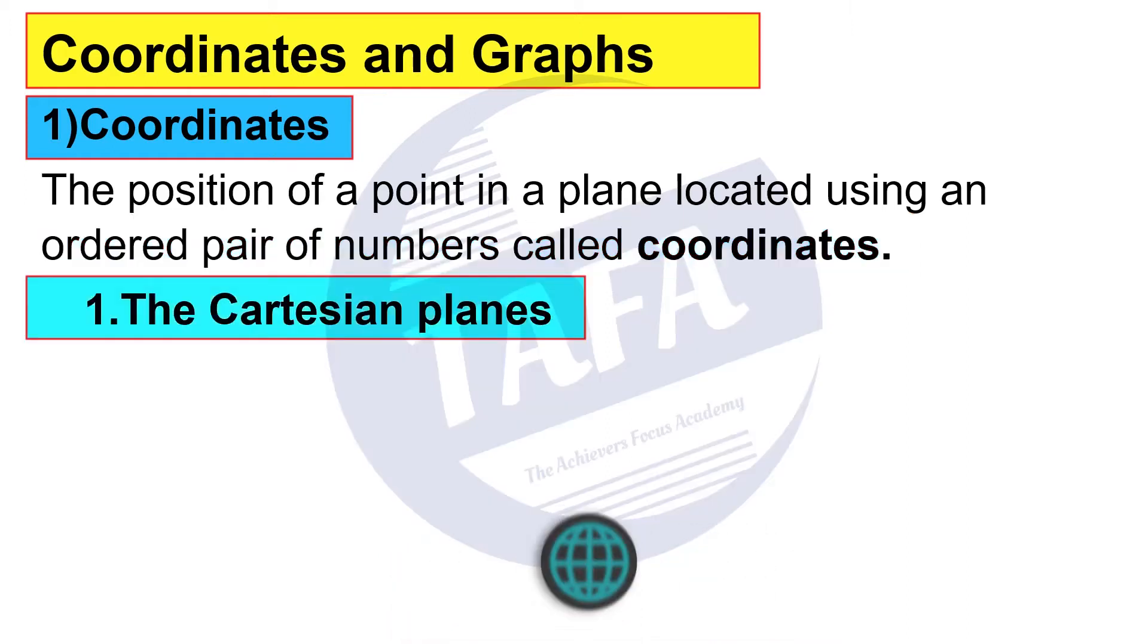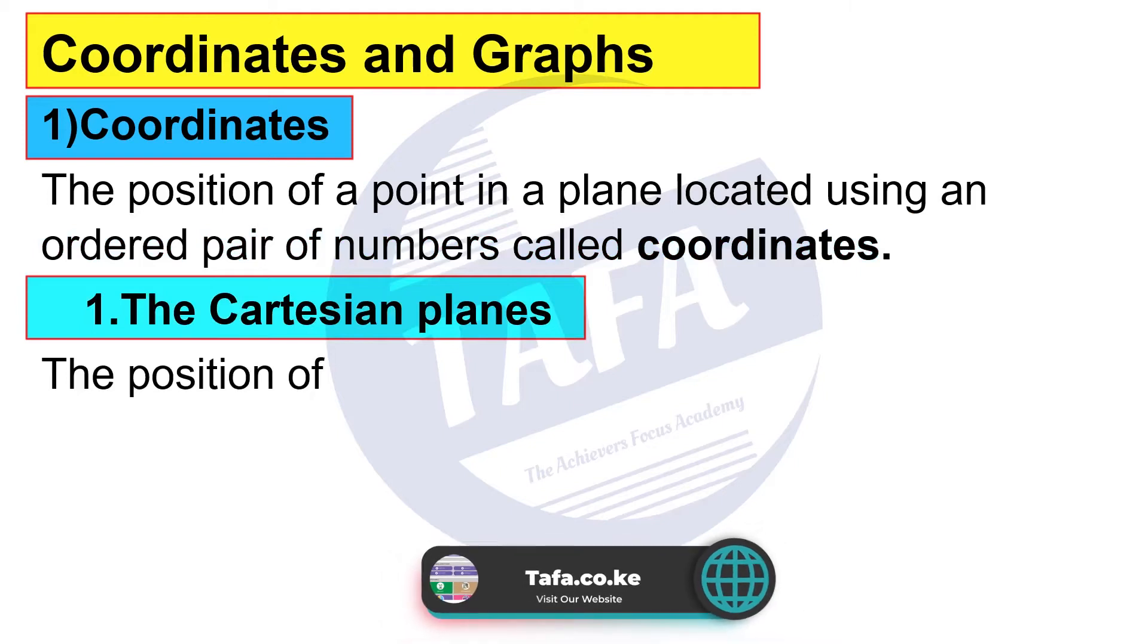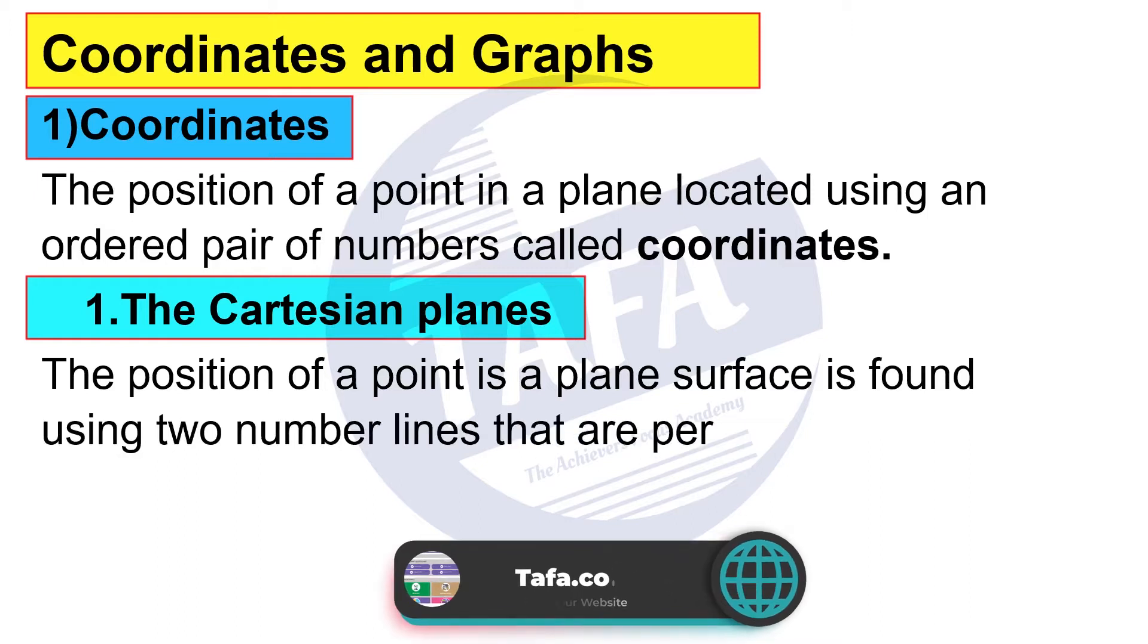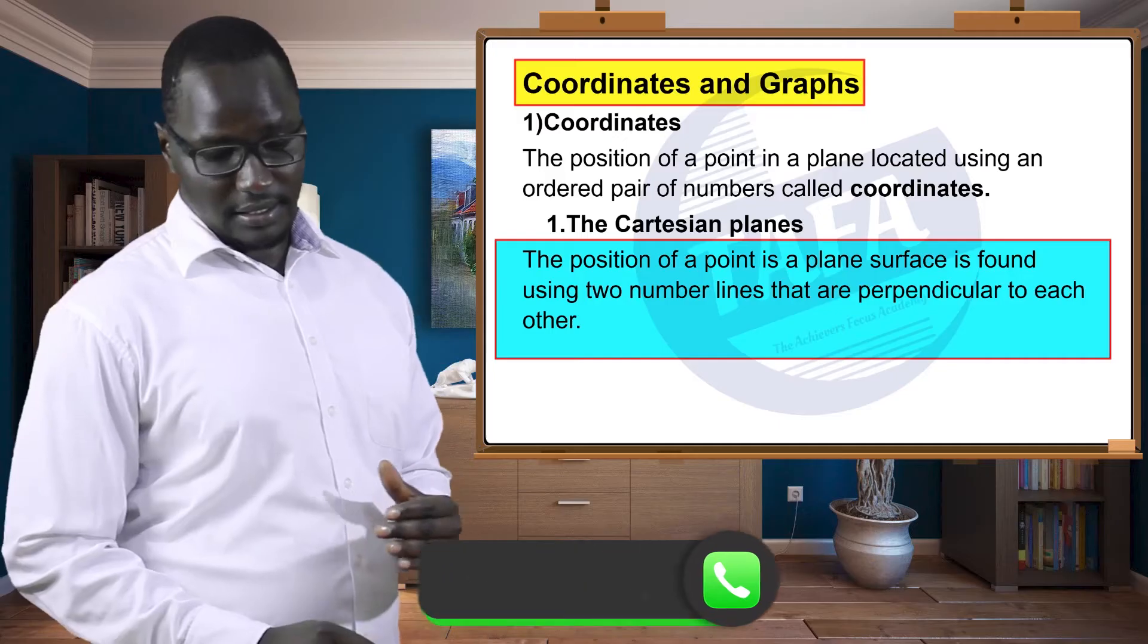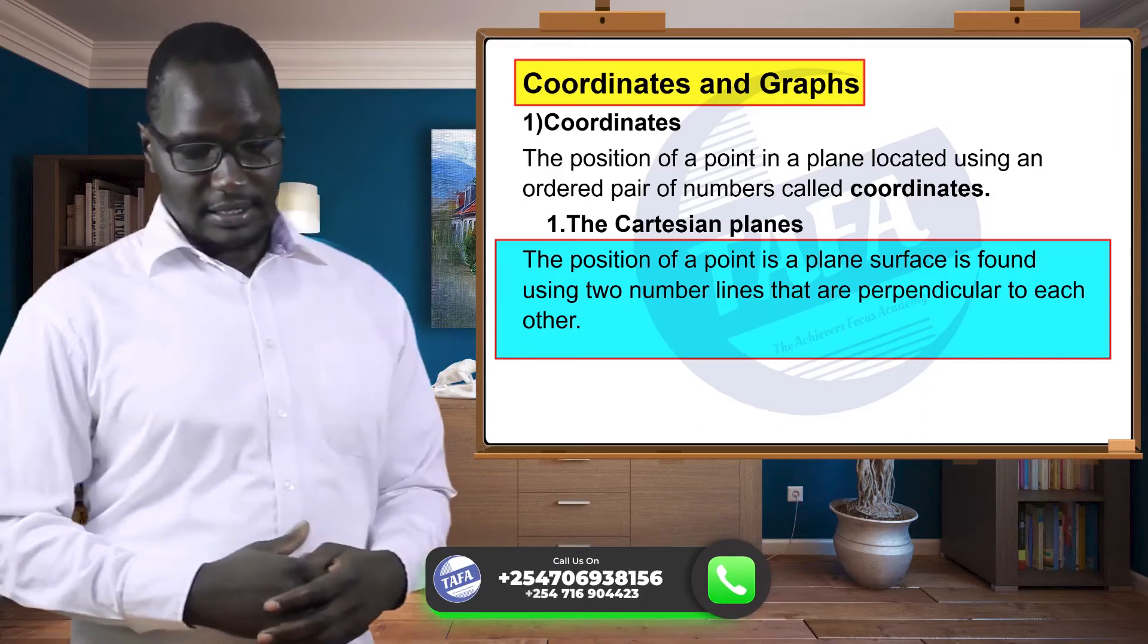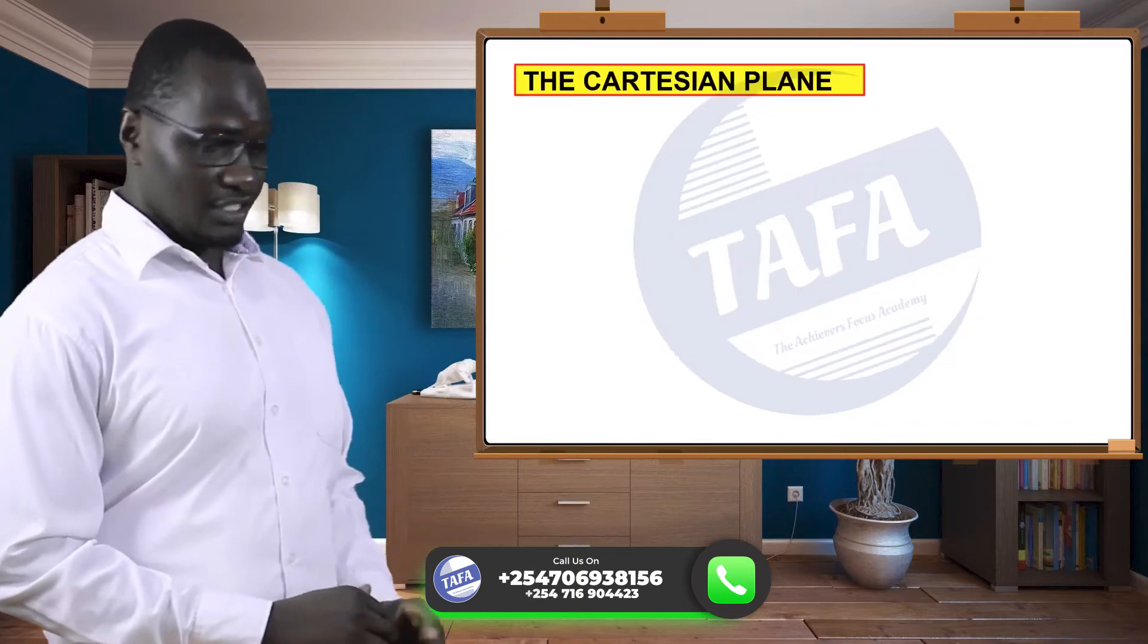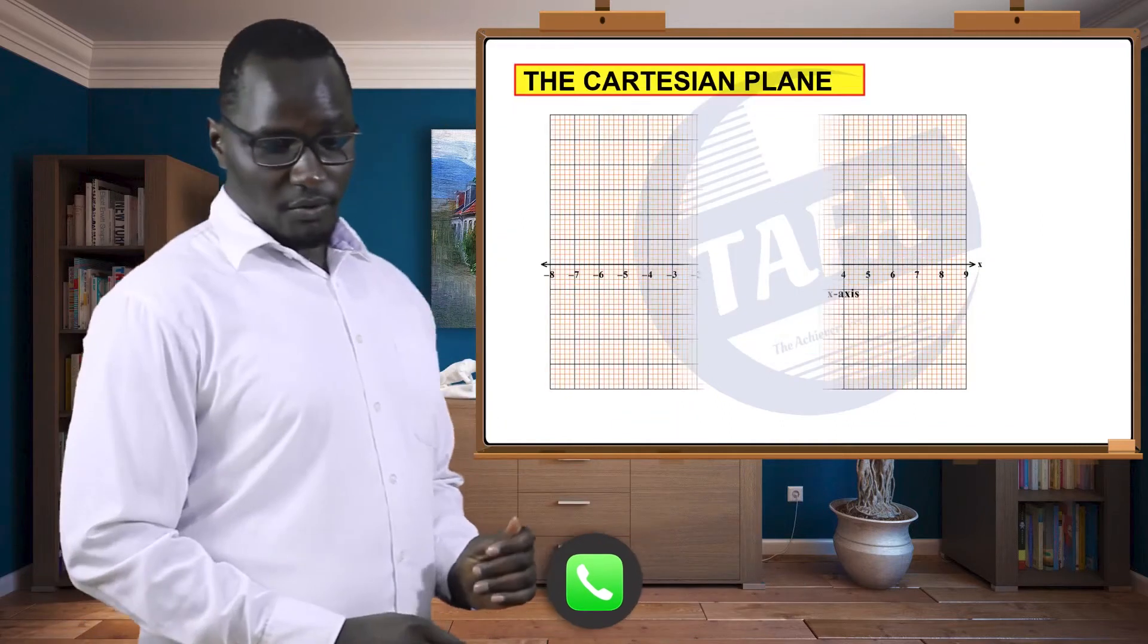Now we are going to look also at the Cartesian plane. The position of a point on a plane surface is found using two number lines that are perpendicular to each other. These two lines meet at a fixed point O called the origin.